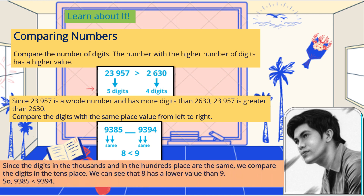Which is larger, 8 or 9? Of course 9. Since the digits in the thousands and hundreds place are the same, we compare the digits in the tens place: 8 and 9. We can see that 8 has a lower value than 9, so 9,385 is less than 9,394.